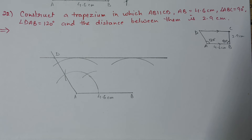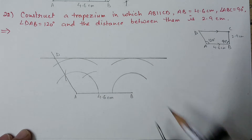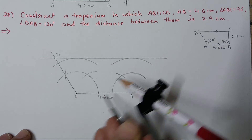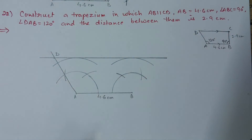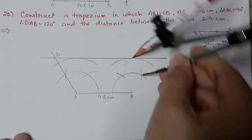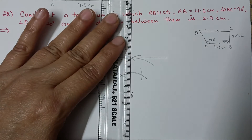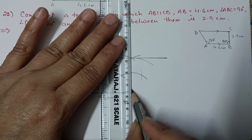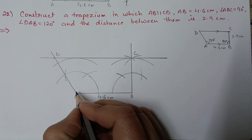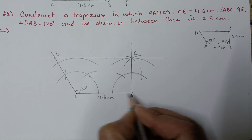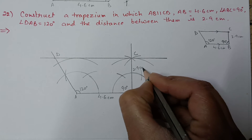To get point C, construct a 90 degree angle at B. Draw the first semicircle, first arc at 60 degrees, second arc at 120 degrees, then bisect between 60 and 120 to get 90 degrees. Where the perpendicular from B meets the parallel line is point C. The trapezium is ready — write measurements: angle 120°, angle 90°, perpendicular distance 2.9 centimeter.